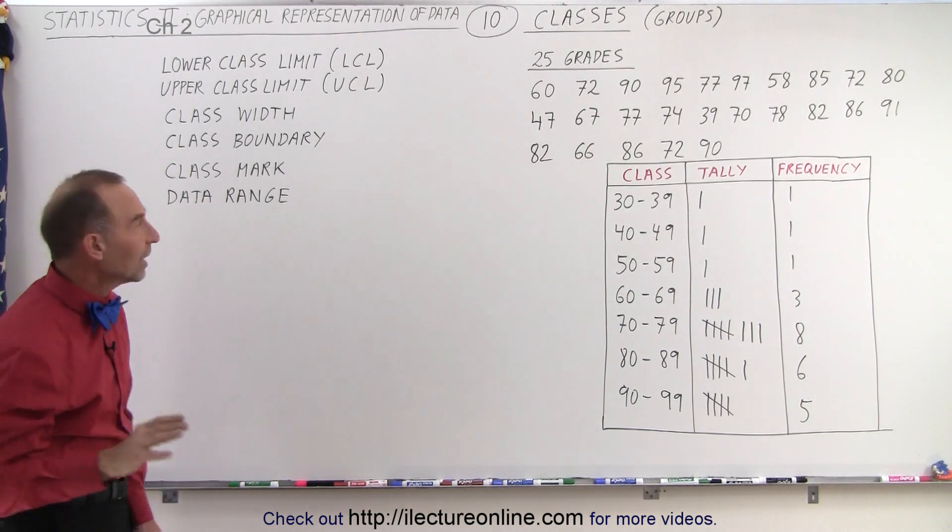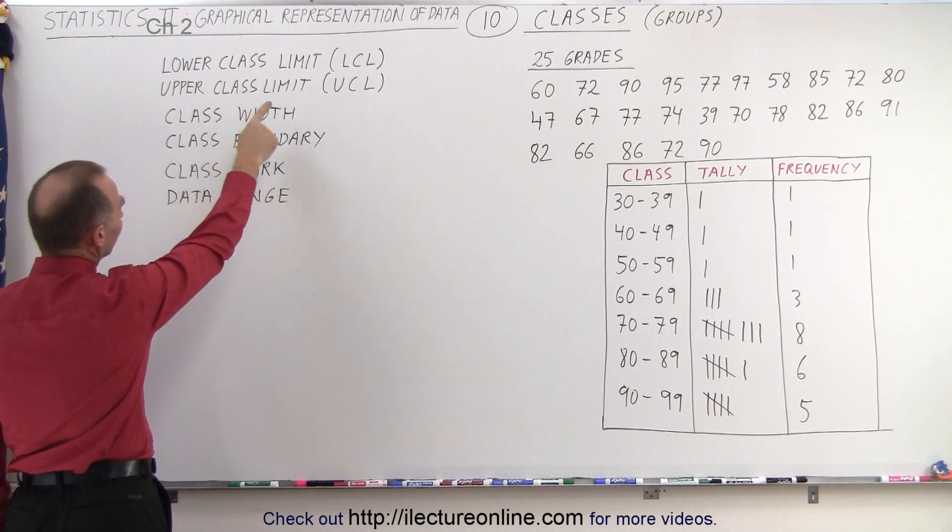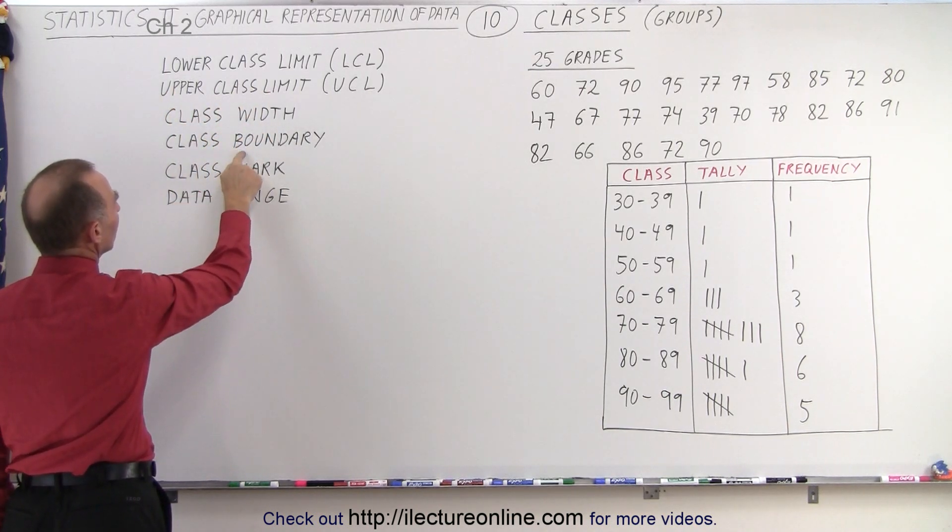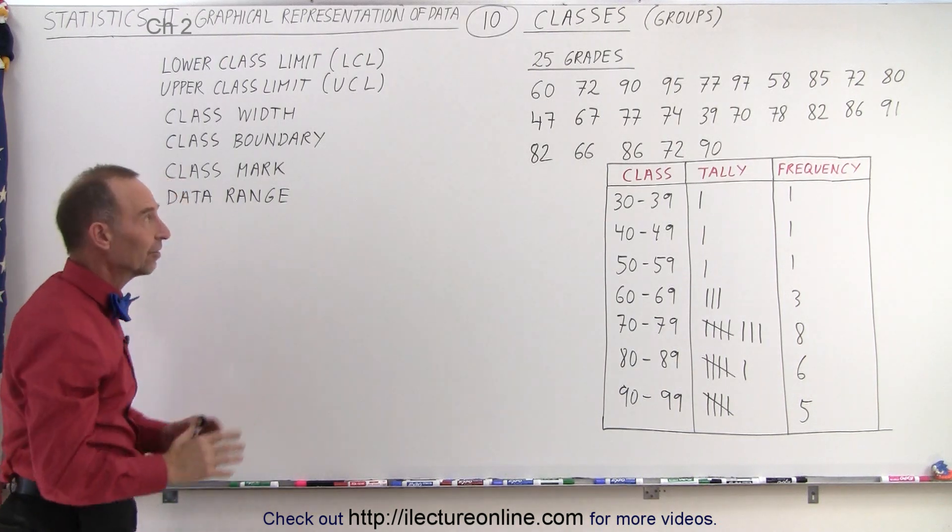There's some additional names and terms we should be familiar with: the lower class limit, the upper class limit, the class width, the class boundary, the class mark, and the data range of a data set.